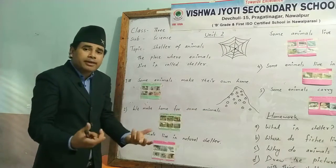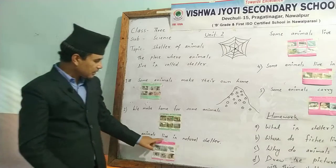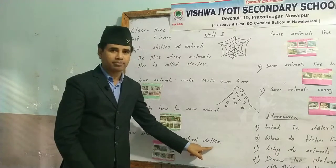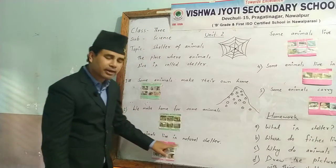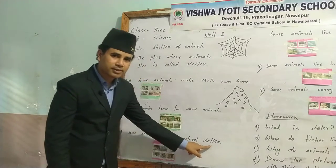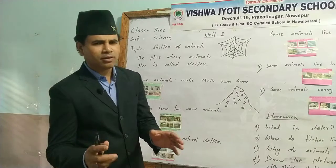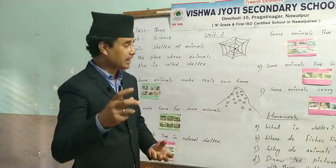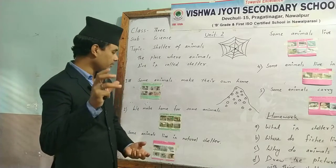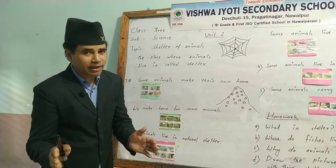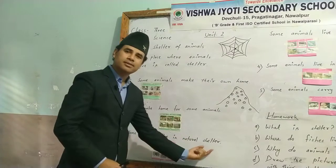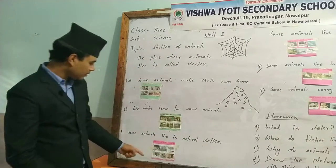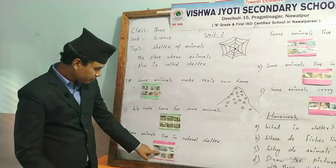Point number three: some animals live in a natural shelter. For example, a lion lives in a den. They do not make their den by themselves, which is why it is called a natural shelter.